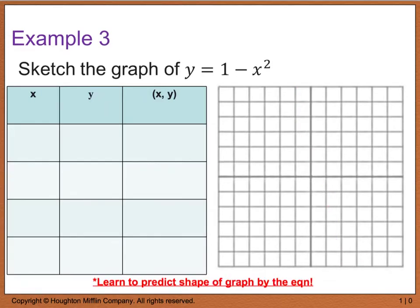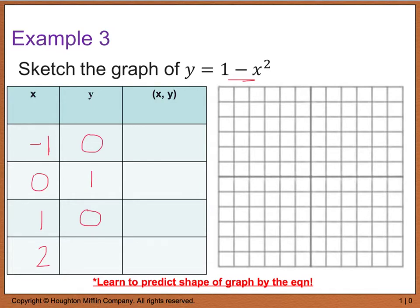Example 3 is similar: sketch the graph of y equals 1 minus x squared. I'll pick x values of negative 1, 0, 1, and 2. Plugging negative 1 in gives 0; plugging 0 in gives 1; plugging 1 in gives 0; and plugging 2 in gives negative 3. The ordered pairs are negative 1 comma 0, 0 comma 1, 1 comma 0, and 2 comma negative 3.